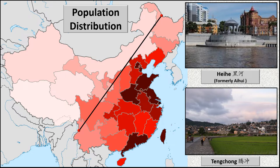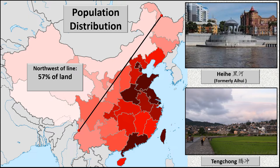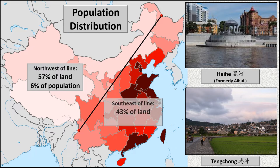In fact, the population distribution contrast is stunning. Using current statistics, the northwest makes up 57% of China's land area but holds only 6% of its population, while the southeast is 43% of the area but is home to 94% of the people.